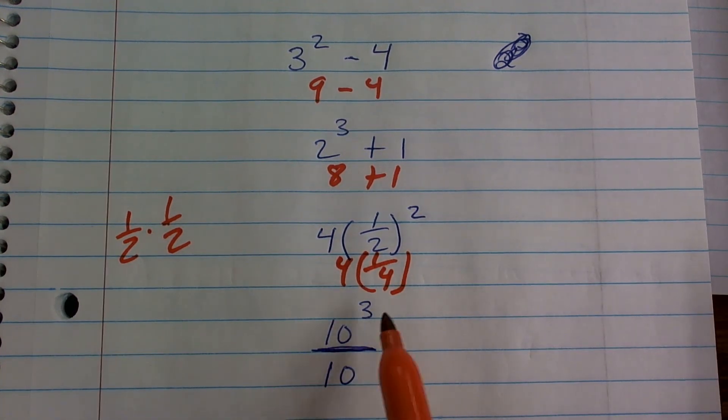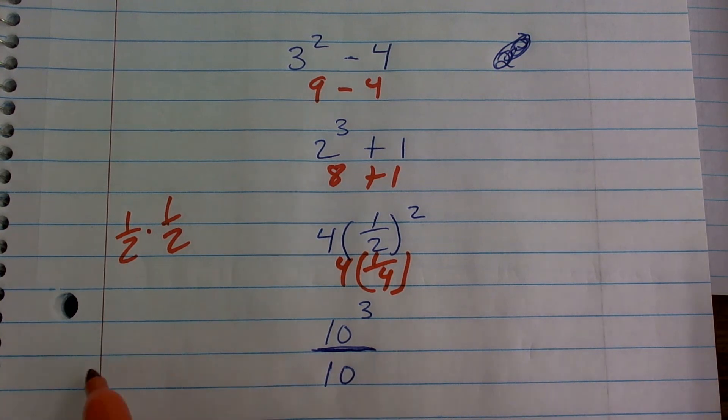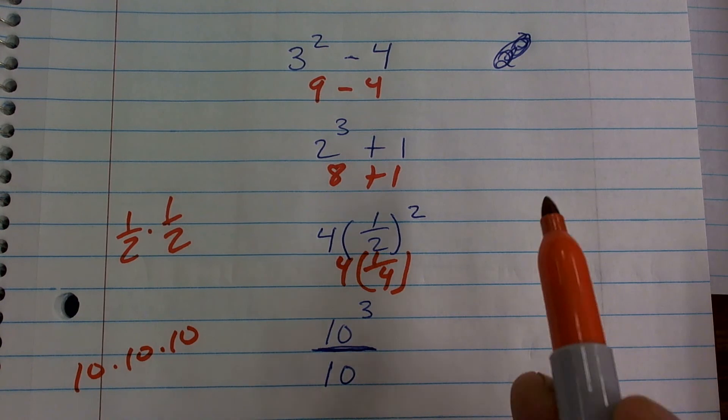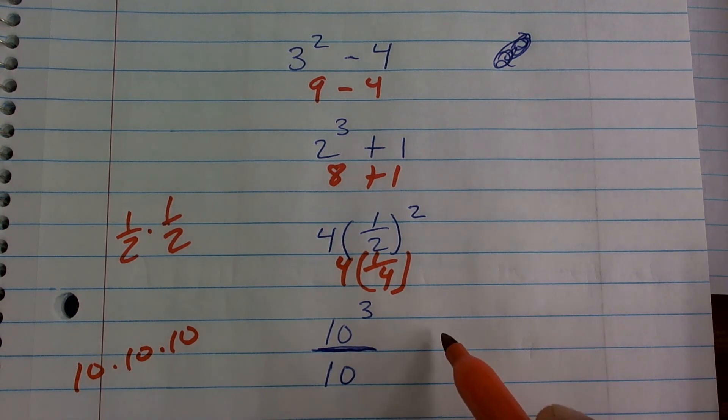Here I'm going to have 10 cubed, which is 10 times 10 times 10. Well, 10 times 10 is 100, times 10 is going to be 1,000.